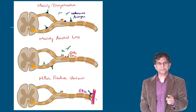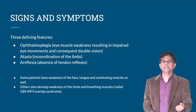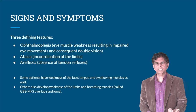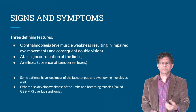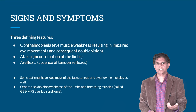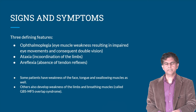Signs and symptoms — the three defining features: ophthalmoplegia (eye muscle weakness resulting in impaired eye movements and consequent double vision), ataxia (incoordination of the limbs), and areflexia (absence of tendon reflexes). Some patients also have weakness of the face, tongue, and swallowing muscles, while others develop weakness of the limbs or breathing muscles. A GBS/Miller-Fisher overlap syndrome can also occur.